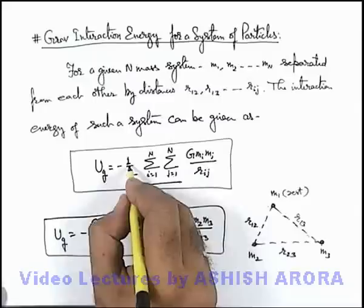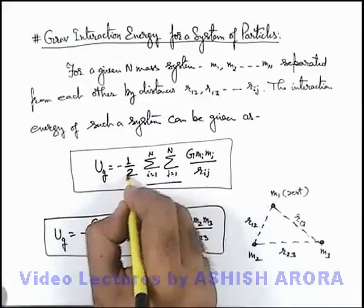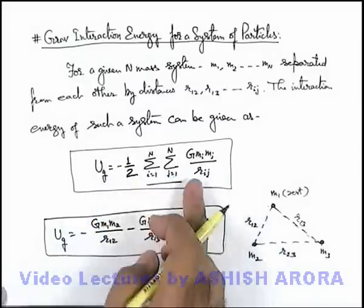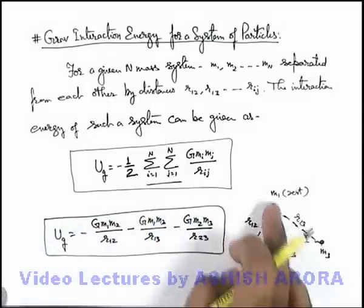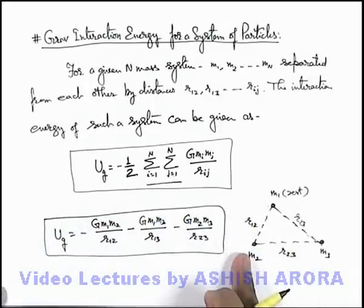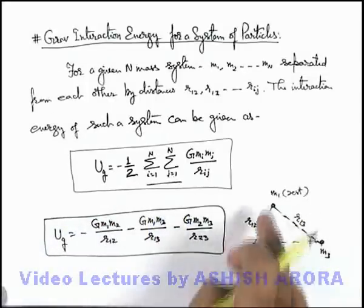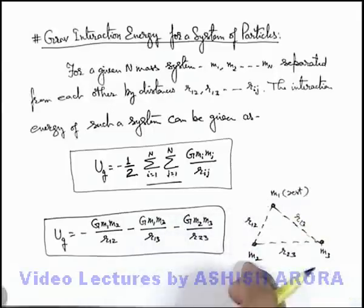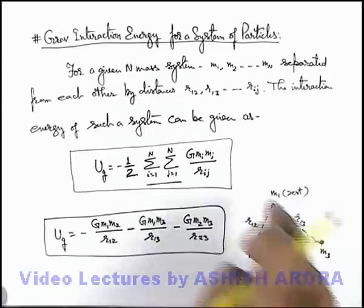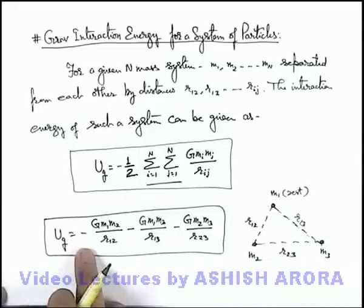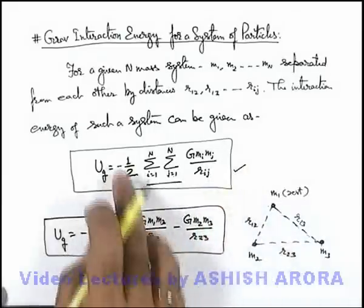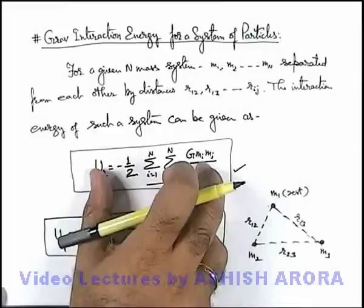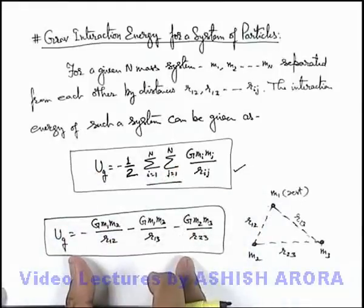That's why you can see I have just kept 0.5 or half outside this expression, which will cancel it out. Like here if I consider all pairs, there can be 6 possibilities: m1 m2, m1 m3, then m2 m1, m2 m3, then m3 m1, m3 m2. So each term will be taken twice, so if I use this expression I will take half outside. So this will give me the same expression which we are calculating.